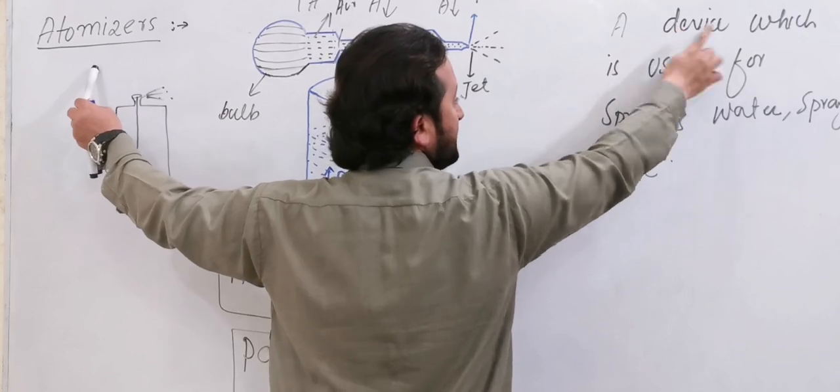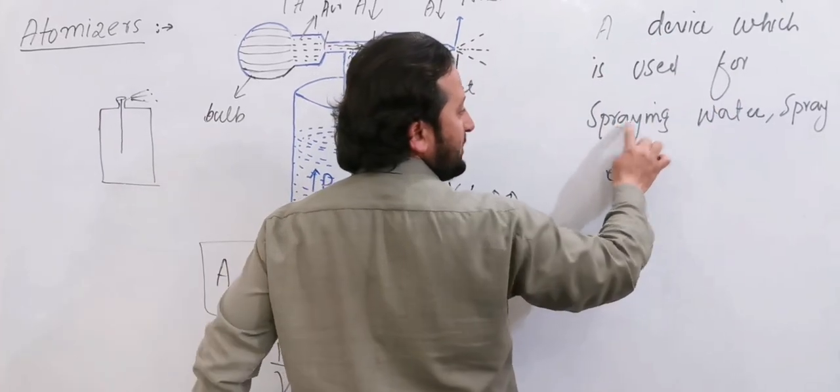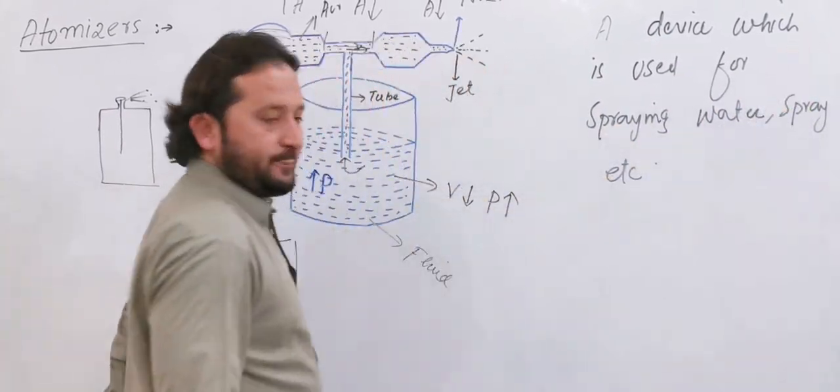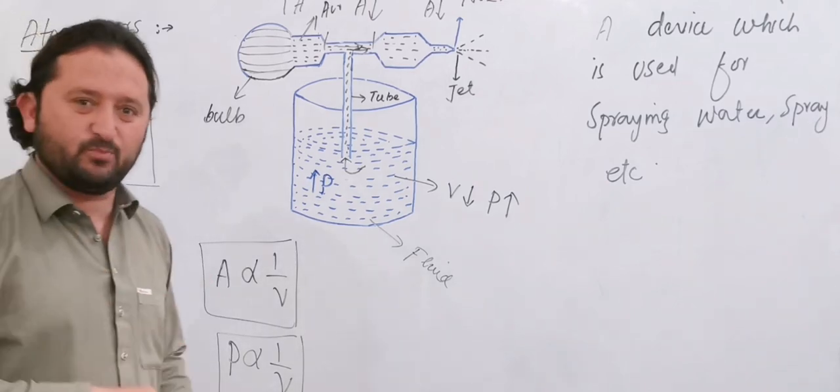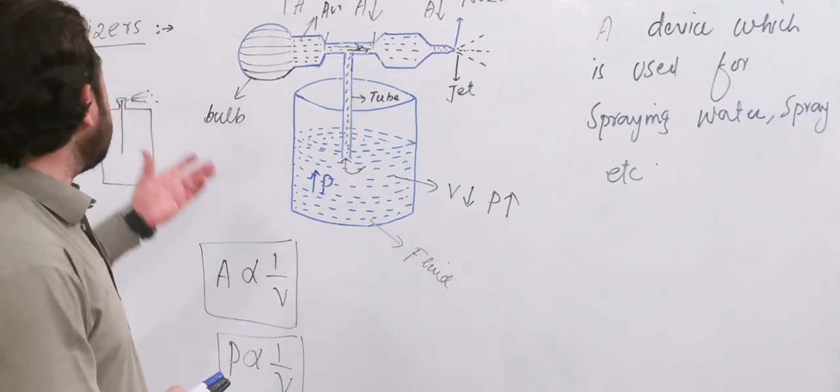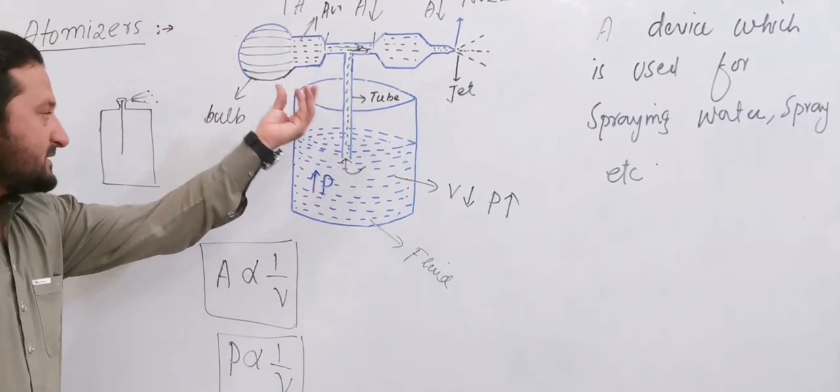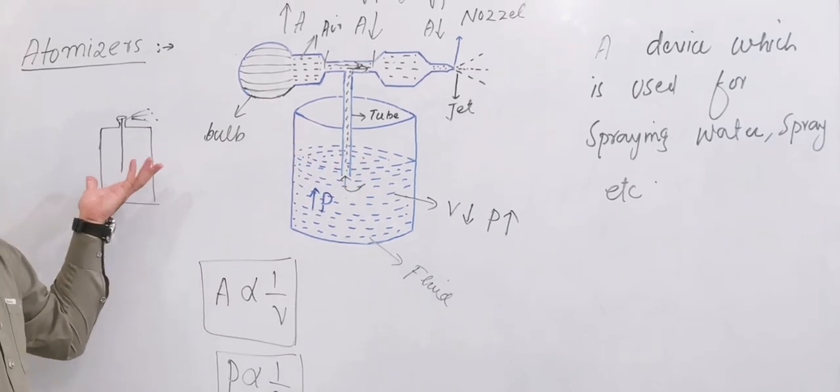Atomizer is a device which is used by spraying water. Atomizer is a device which is used by spraying water.